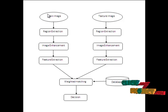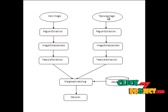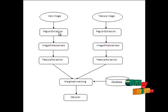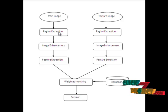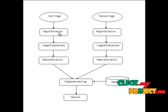This is the flow of the process. We are testing with two biometrics: finger vein and finger texture images. Initially we provide the finger vein image, which passes to the region extraction stage. In region extraction, we extract the vein from the input image using adaptive threshold segmentation.